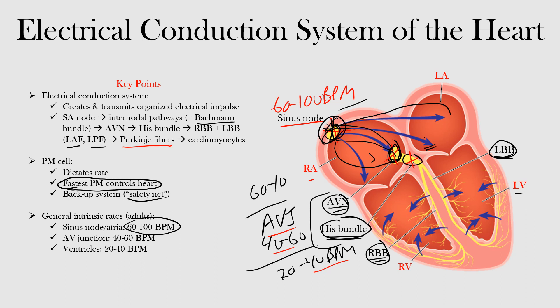The pacemaker cell dictates the rate of the heart, and the fastest pacemaker controls the heart. Backup systems take over if those above them fail. The key intrinsic rates: the sinus node and atria between 60 and 100 beats per minute; the AV junction — AV node and His bundle — between 40 and 60 beats per minute; and the ventricles between 20 and 40 beats per minute. That concludes this lecture on the electrical conduction system of the heart.